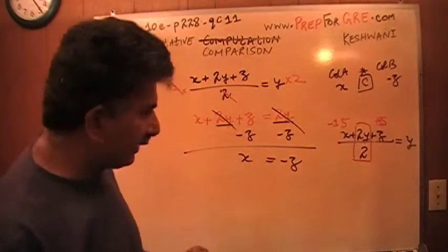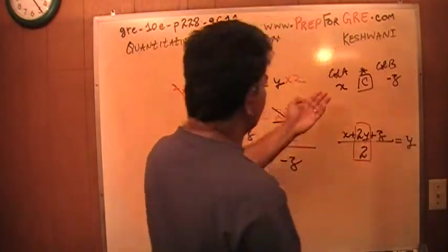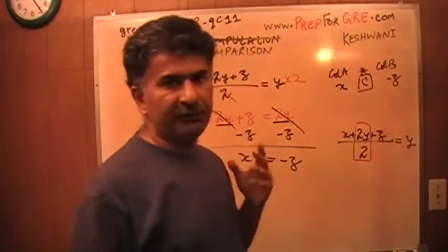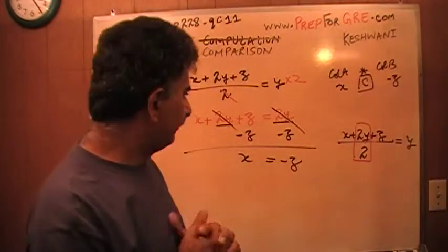They have to be equal to each other and opposite in sign, which is what this is. X equals negative z, which is the same as saying z equals negative x. Same thing.